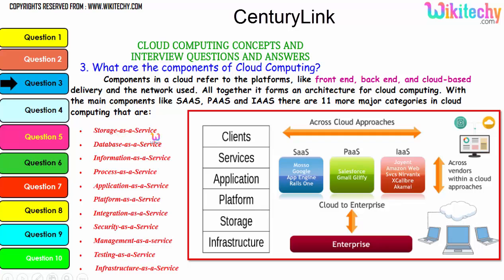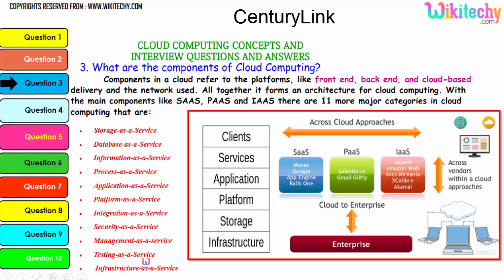There are 11 major categories in cloud: storage as a service, database as a service, information as a service, process as a service, application platform, integration, security, management, testing, and infrastructure. These are additional services associated with the three major service models that together form cloud computing.